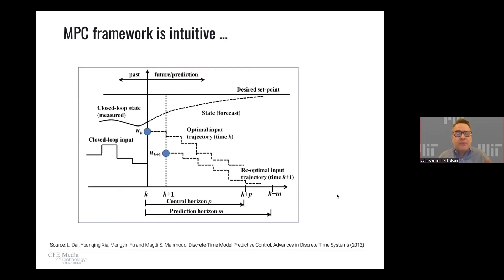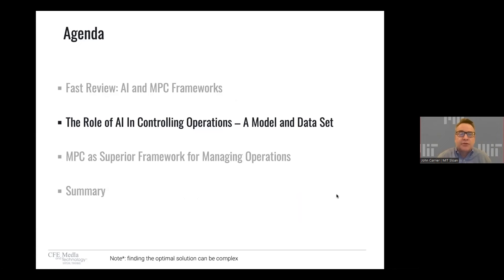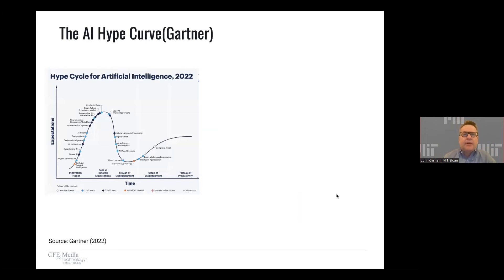Now, in contrast, let's look at model predictive control. This framework's more intuitive, and you can actually model it by thinking about riding a bike. The model predictive control framework is something we use every day as humans, even if we're not always aware of it.